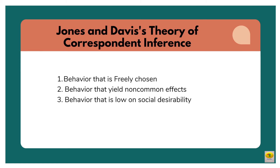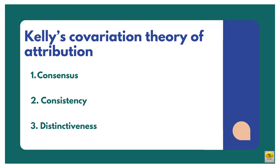The third behavior is one that is low on social desirability — that is, we pay more attention to others' actions that are low on social desirability than to actions that are high on this dimension. Thus, according to this theory proposed by Jones and Davis, we are most likely to conclude that others' behaviors reflect their stable traits when their behavior is freely chosen.